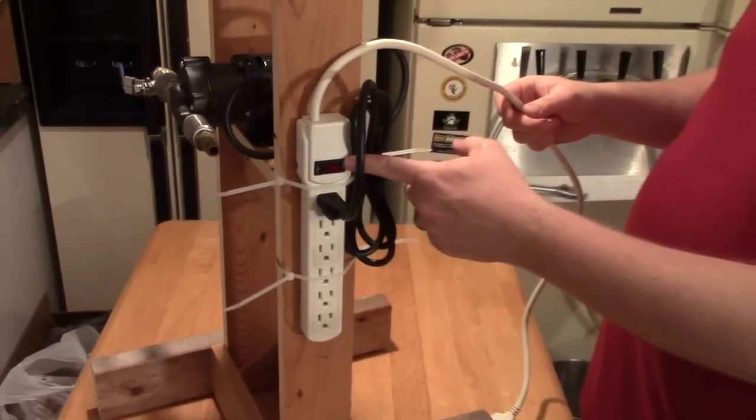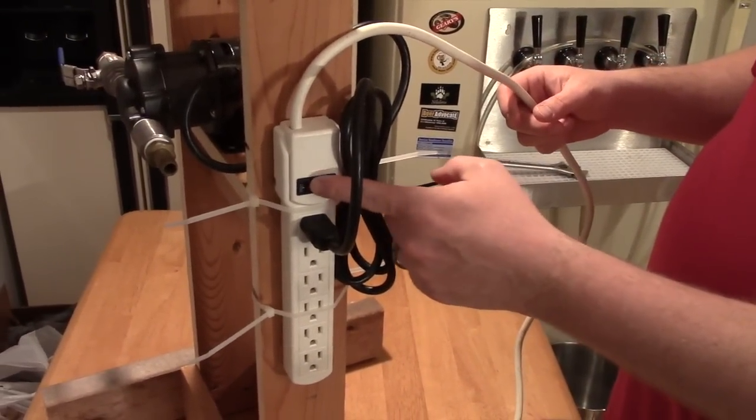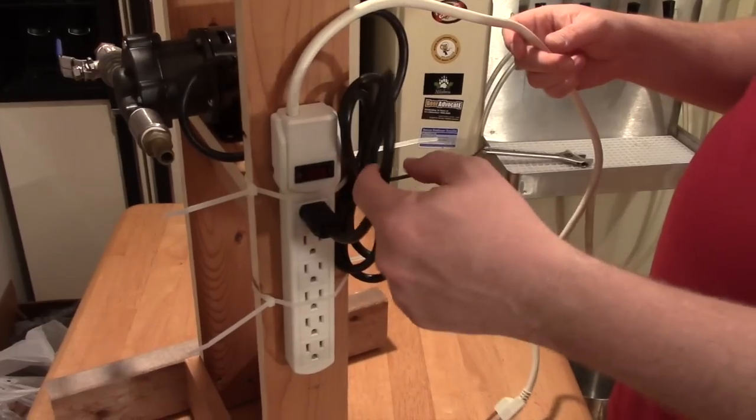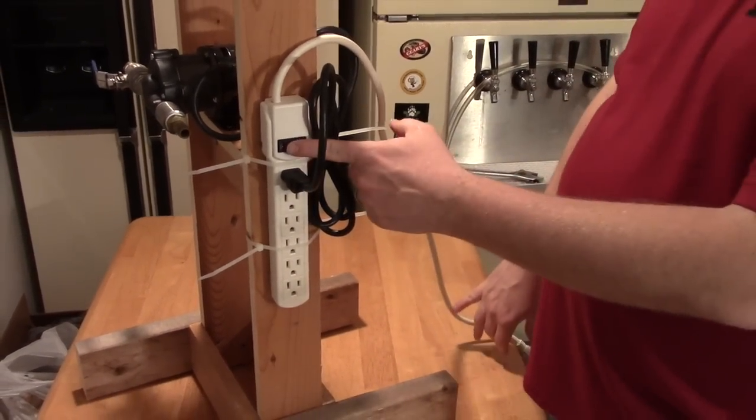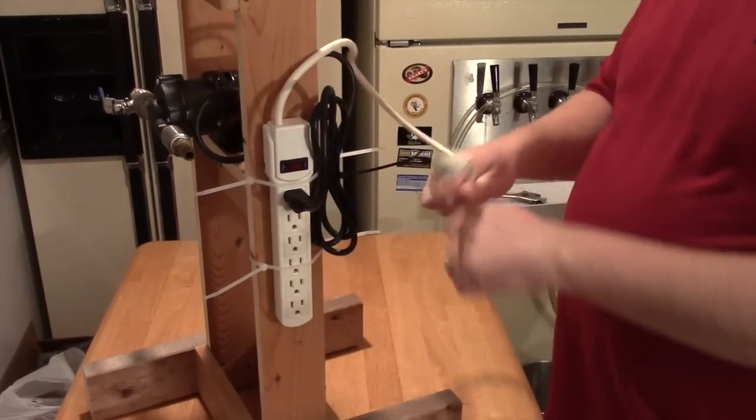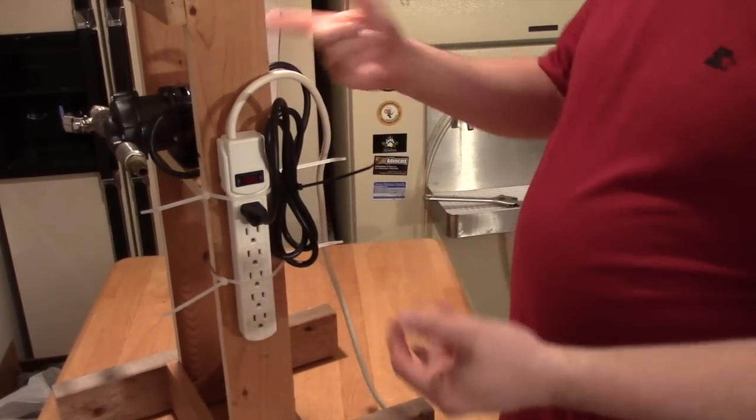On this side here I zip-tied on my power strip that's got a toggle switch. So the pump is plugged in here and then the other end will go into my power supply when I'm brewing. So I can turn the pump on and off right here rather than disconnecting a plug. That's how I did it before.